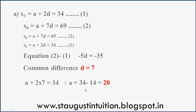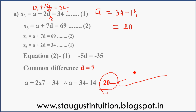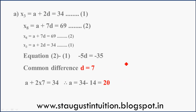Now we find the first term. D equals 7. So a plus 2 into 7 equals 34, that is a plus 14 equals 34. Therefore a equals 34 minus 14, which is 20. So first term is 20 and D is 7.